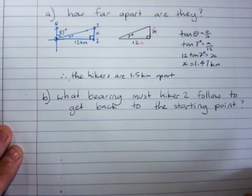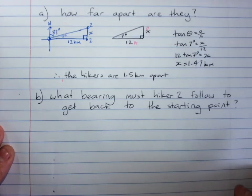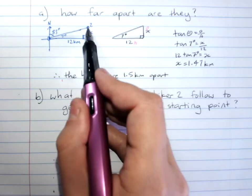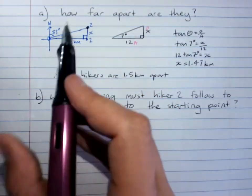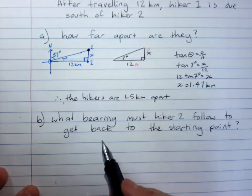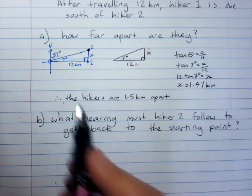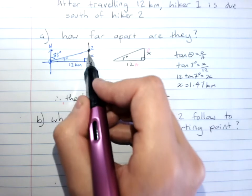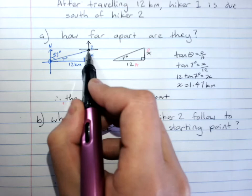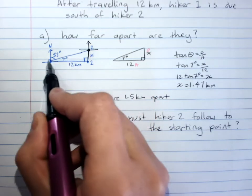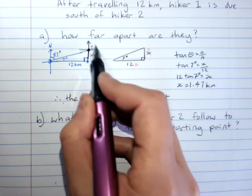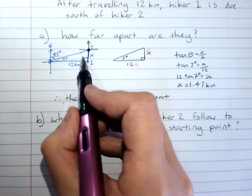What bearing must hiker 2 follow to get back to the starting point? Hiker 2 ended up here. When you are asked to get a bearing from a new point that's not here, I suggest drawing a little compass rose. Because now this person is going from here back to the start. From this diagram, you can quite easily get the bearing.